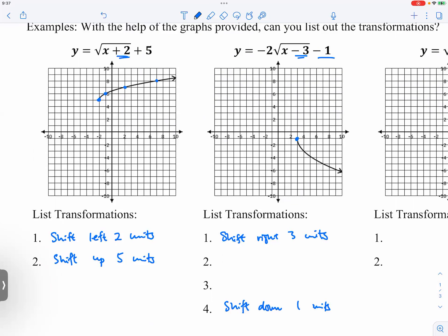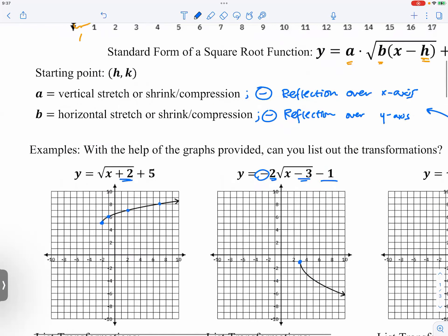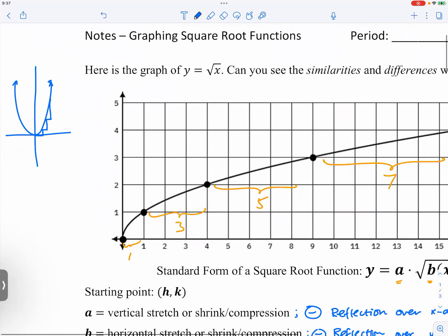And now what about the two and the minus in front of the square root? The two means a vertical stretch by two. If you look at the parent function, we only go up one unit every single time, right?